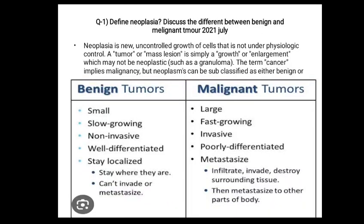Question number 1: Define neoplasia. Discuss the difference between benign and malignant tumor. Neoplasia refers to uncontrolled growth of cells that is not under physiological control. A tumor or mass lesion is simply a growth or enlargement, which may not be neoplastic. The term cancer implies malignancy, but neoplasms can be subclassified as either benign or malignant.